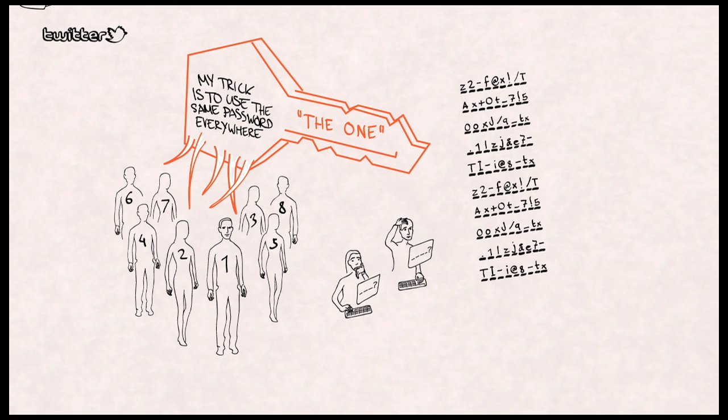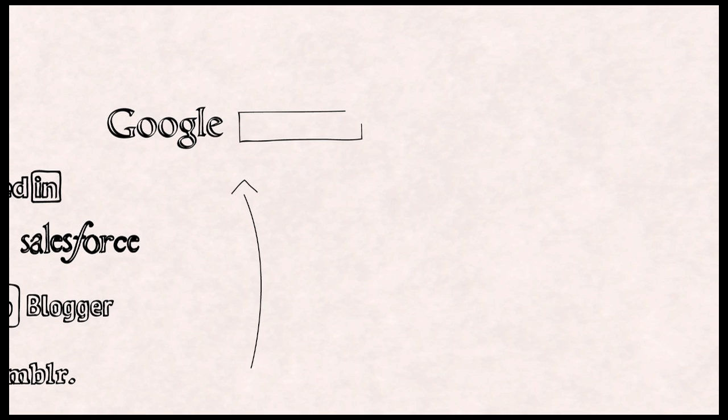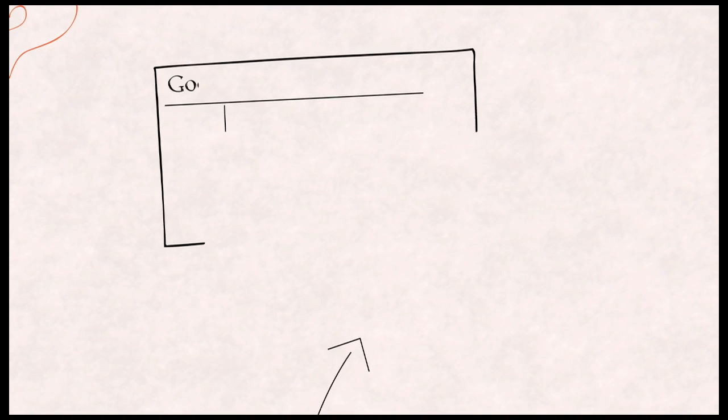But what if someone actually did want to get access to your mail account? Here's an example of how that is done. First of all, finding your actual mail address isn't exactly rocket science. Then it takes about 5 minutes of online search to find out about your hobbies, for instance, where you work out.